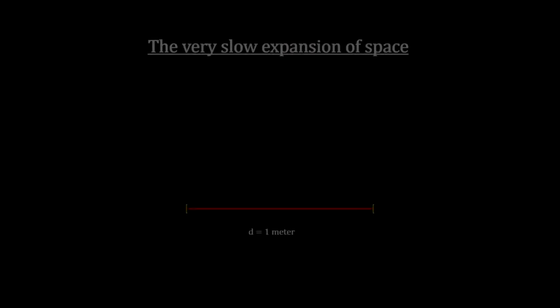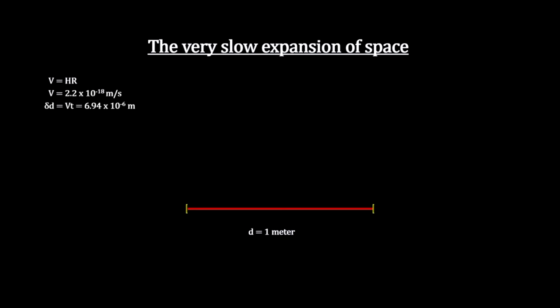The real expansion is very slow. If we take a look at what the expansion does to one meter, we see that it would take a million years to expand by just seven millionths of a meter. That's way too slow to ever notice or even measure in a lab in a lifetime. And it is why it's so easy to overcome it with local gravity out to the Andromeda galaxy.